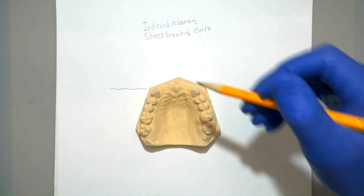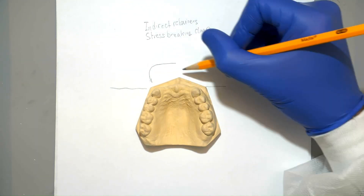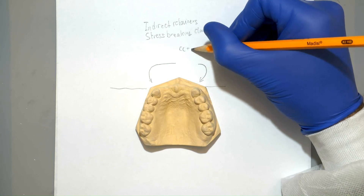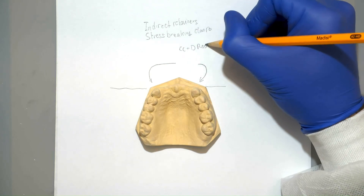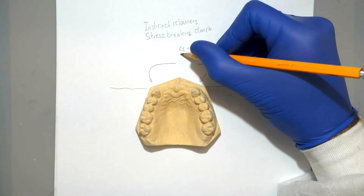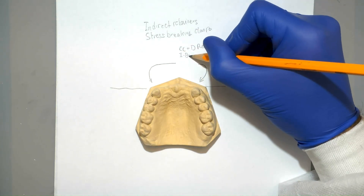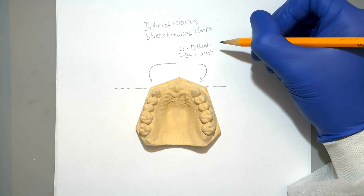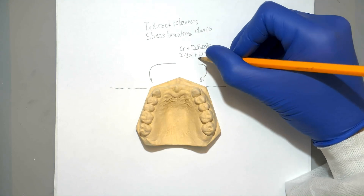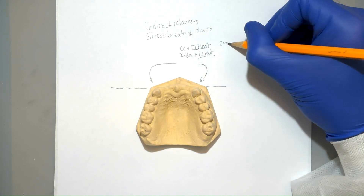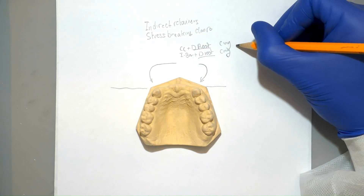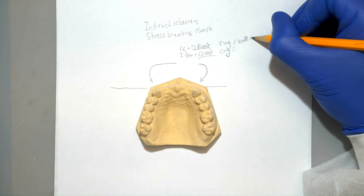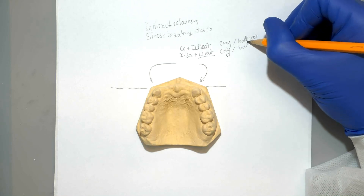Stress-breaking clasps are going to be a little different. On these two teeth, we're going to be talking about cast circumferential clasps with a distal rest and an eye bar with a distal rest. In those cases, those are anterior teeth, so we're going to be using a cingulum rest or a ball rest.